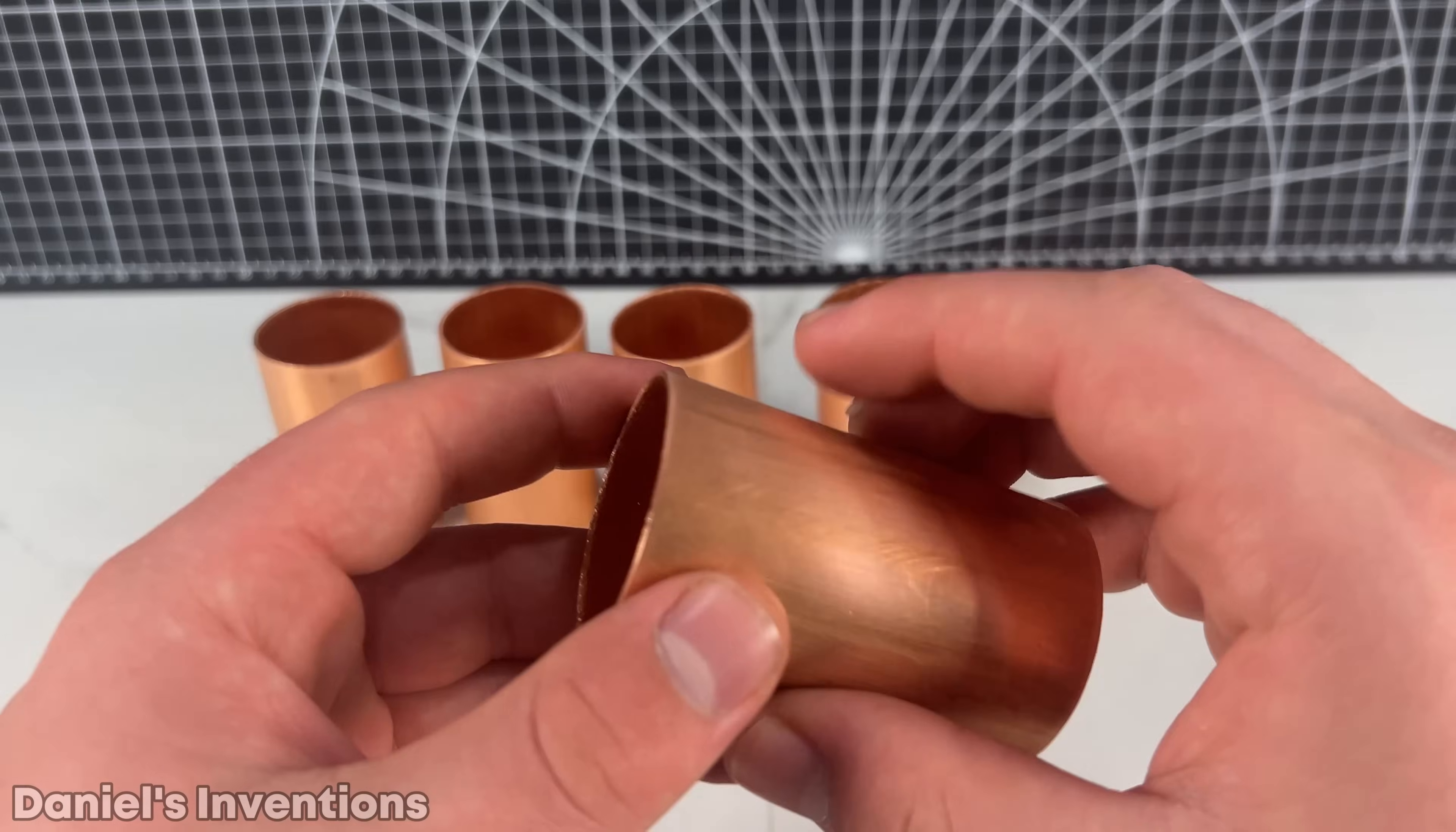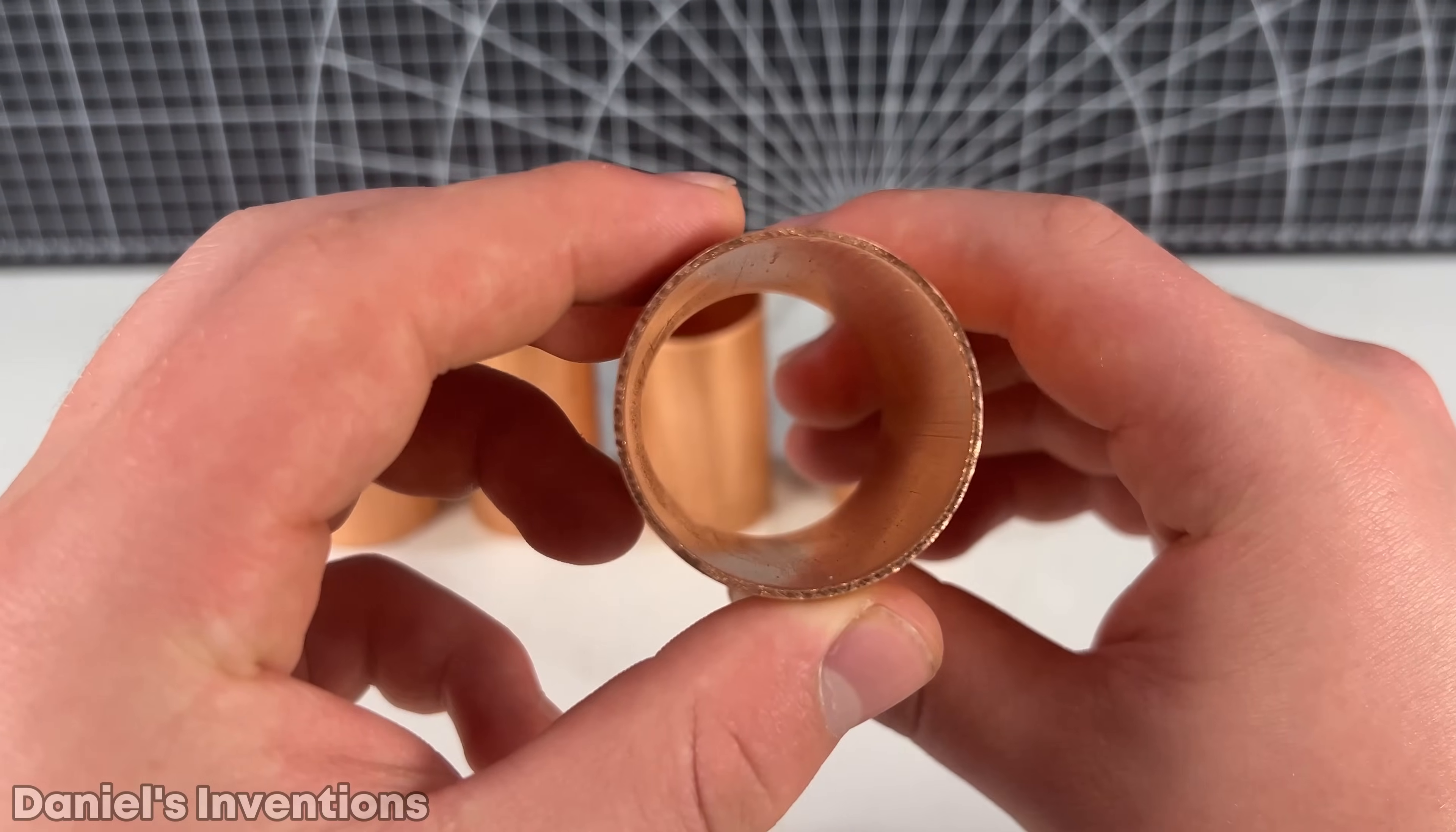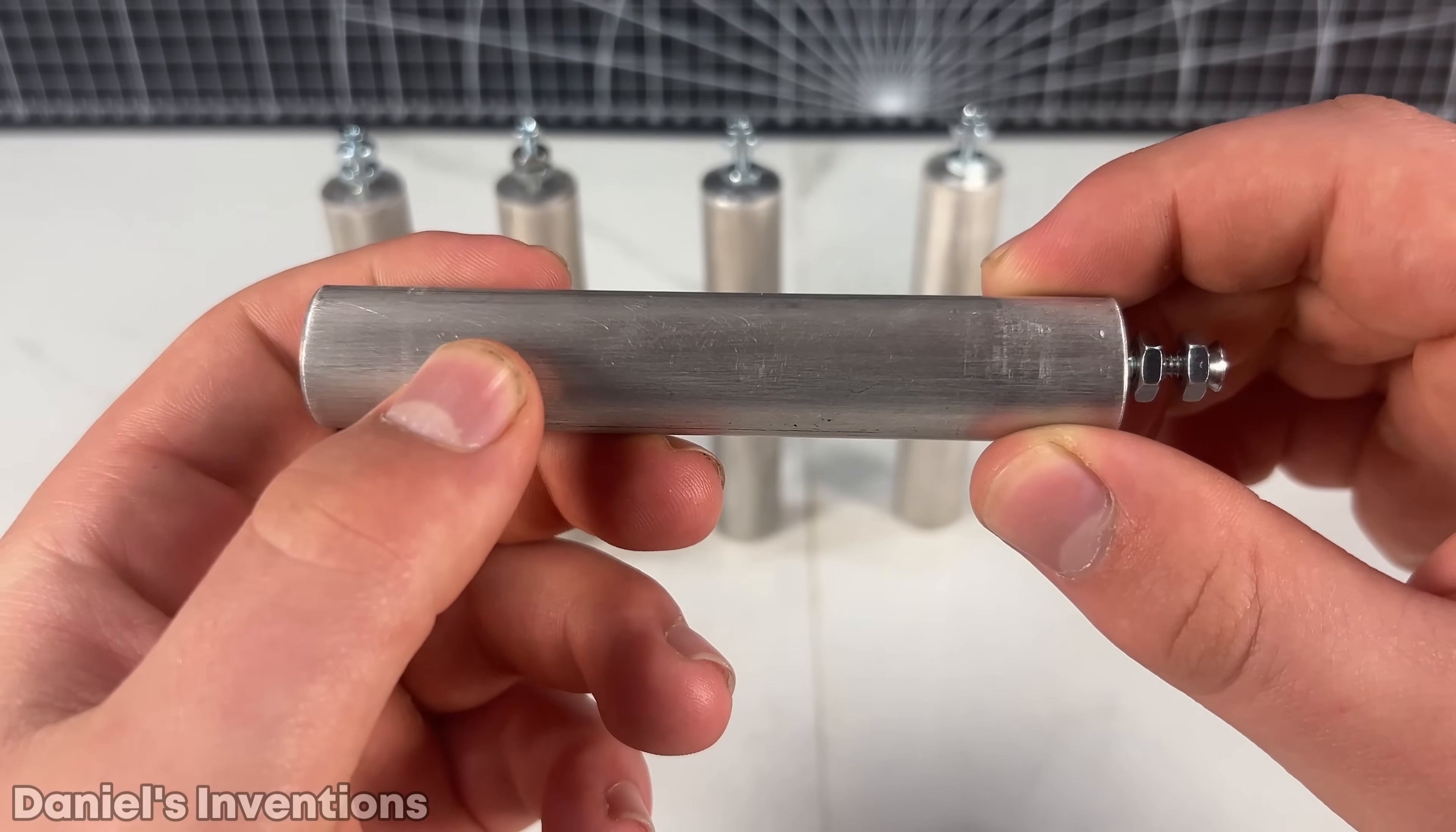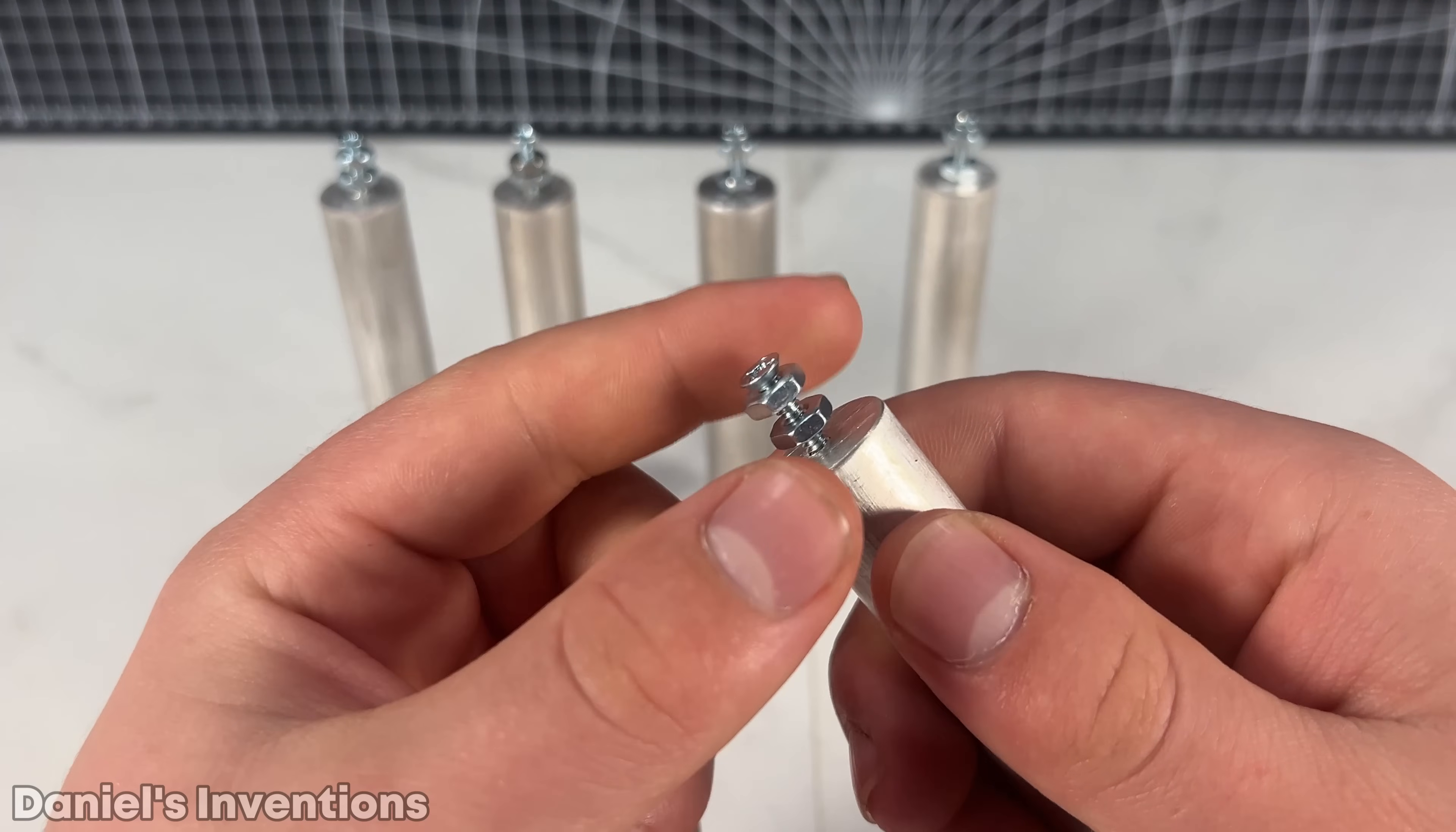I am using an inch and a half copper tubing for the casing of the battery. I am using three quarter of an inch magnesium rods for the core of the battery.